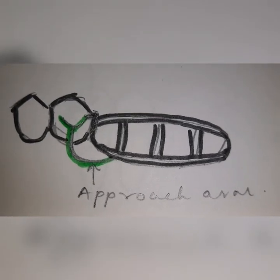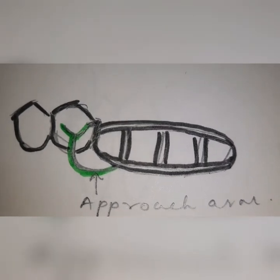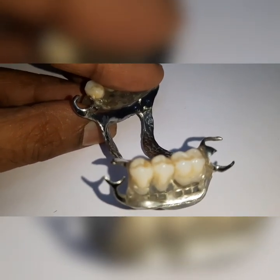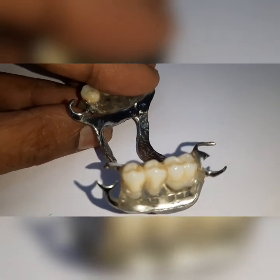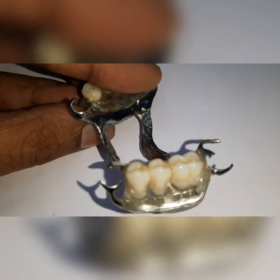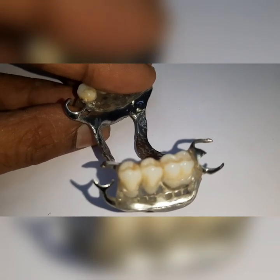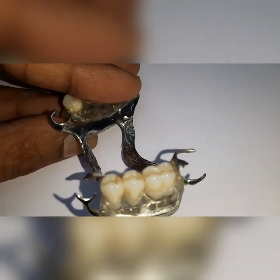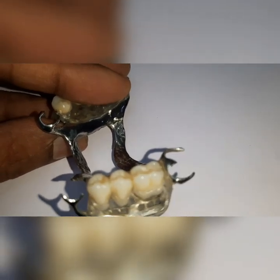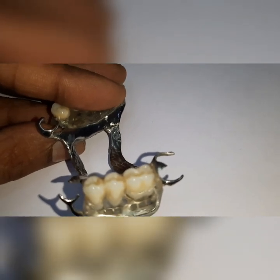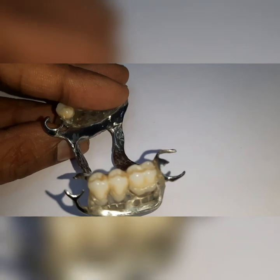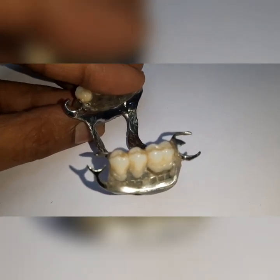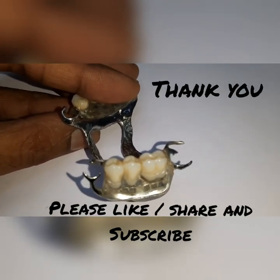The fourth type of minor connector acts as an approach arm in a bar clasp design. This is an exception because it is the only minor connector that is not rigid. It tapers from its origin to the terminus, and it does not cross the tissue undercut. It provides space for the attachment of teeth and the acrylic base. This concludes our discussion on minor connectors. Thank you for watching.